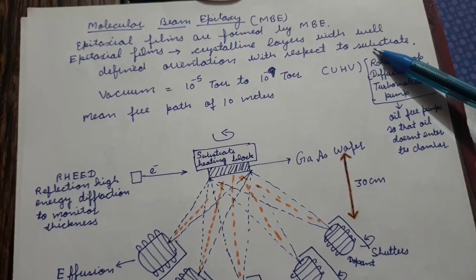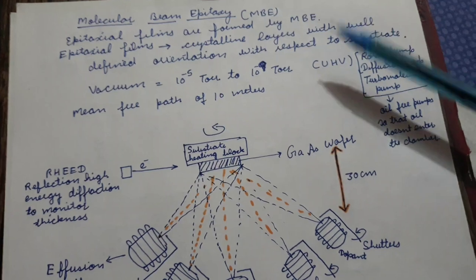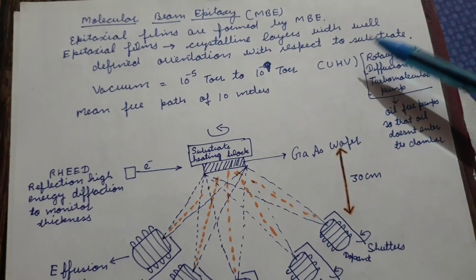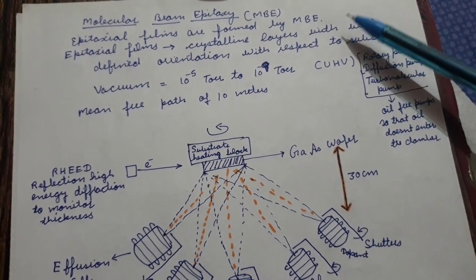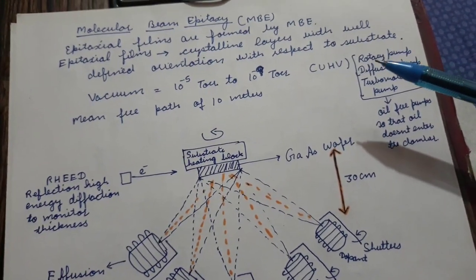What does it mean? If the substrate is 111, then the film will also be 111. If the substrate has orientation of 100, then the film will also have orientation of 100. It will not be a randomly oriented film.